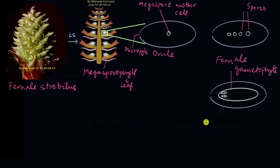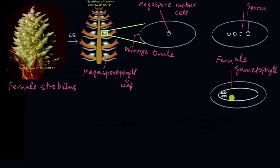You might remember from bryophytes and pteridophytes that the gametophyte is supposed to be a plant — a green plant which can survive on its own and do photosynthesis. But this female gametophyte is a really tiny structure inside the ovule. It is not green and not an independent plant; it is completely dependent on the sporophyte, which is the female cone that is part of the gymnosperm tree. The same is true of the male gametophyte. This is what happened with evolution: the gametophyte became smaller and smaller until it became completely dependent on the sporophyte.